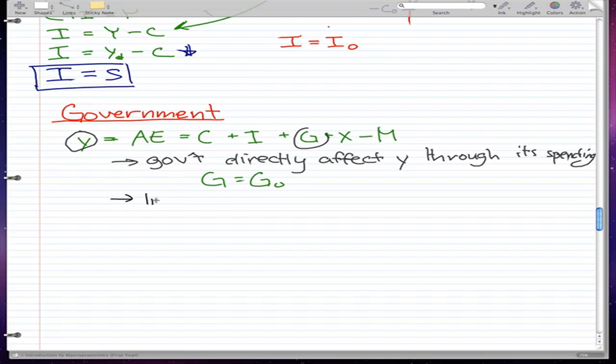Government also indirectly affects Y through its taxing. Now we get into the good stuff - taxes. Government indirectly affects Y or spending through taxing.